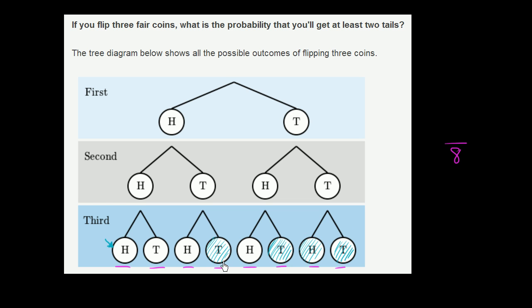And how many of these outcomes met our constraints? One, two, three, four. Four out of the eight—four-eighths, which could also be viewed as equivalent to one-half. The probability that I'll get at least two tails is one-half.